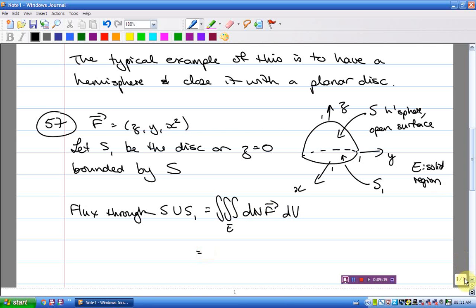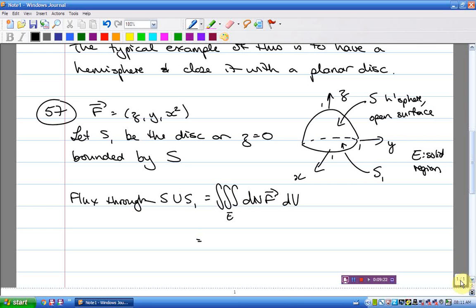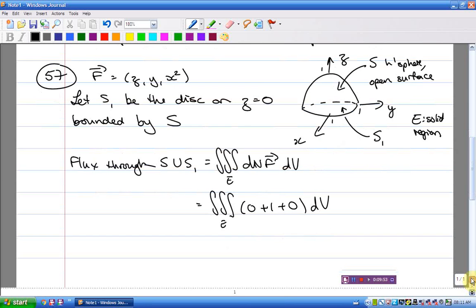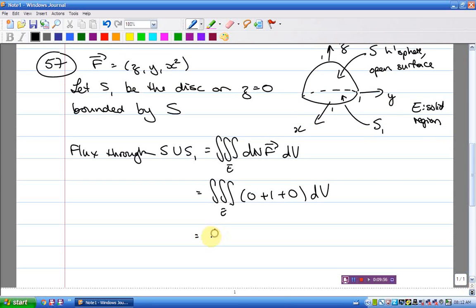Div F is just going to be 1. Can you see that? Because it's the derivative of Z with respect to X plus the derivative of Y with respect to Y plus the derivative of X squared with respect to Z. So it's 0 plus 1 plus 0. So just to be completely pedantic about it, my div is 0 plus 1 plus 0, so it's just 1. I can pull that 1 out. In fact, I was talking about spherical coordinates, but we don't have to go there because I'll just be left with integral integral integral 1 dV. That is the volume of E.